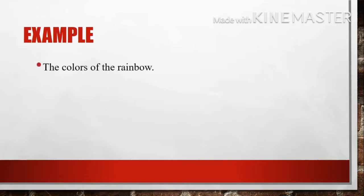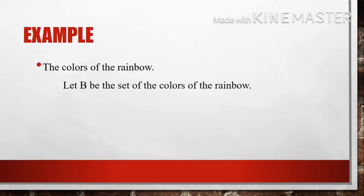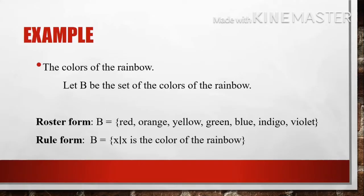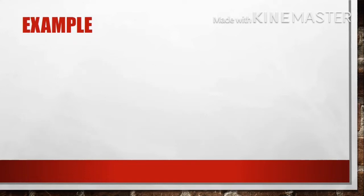Second example: the colors of the rainbow. Let B be the set of the colors of the rainbow. In roster form, set B whose elements are red, orange, yellow, green, blue, indigo, and violet. In rule form, set B = { X | X is a color of the rainbow }.